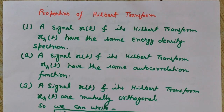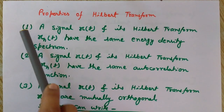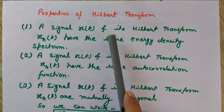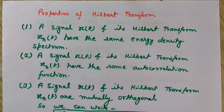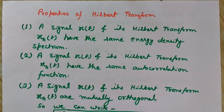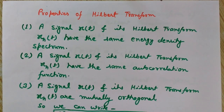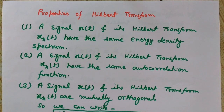Now let's discuss the properties of Hilbert Transform. We will discuss four properties. The first property is that a signal x(t) and its Hilbert Transform x̂(t) have the same energy density spectrum. The energy density spectrum gives the distribution of energy of a signal in the frequency domain — how the energy is distributed corresponding to each frequency.